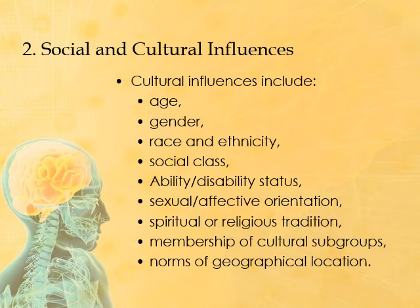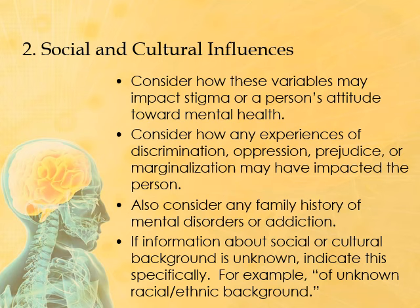We want to consider how these variables may have impacted stigma or a person's attitude towards mental health — they may be more or less likely to seek counseling services based on some of these variables. We also want to consider how any experiences of discrimination, oppression, prejudice, or marginalization may have impacted the person, and consider any family history of mental disorders or addiction, which is the biological or genetic influence. If information about social or cultural background is unknown, you would indicate this specifically — for example, 'of unknown racial or ethnic background.'